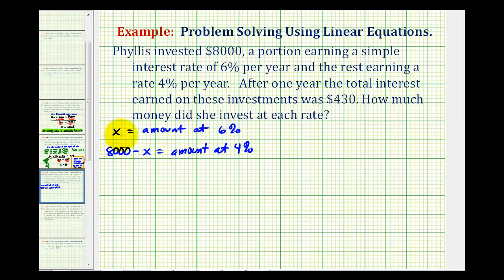So just to check this, let's say there's $3,000 at 6%, then 8,000 minus 3,000 would be 5,000 at 4%. Using these two expressions, the total amount invested will always be $8,000.